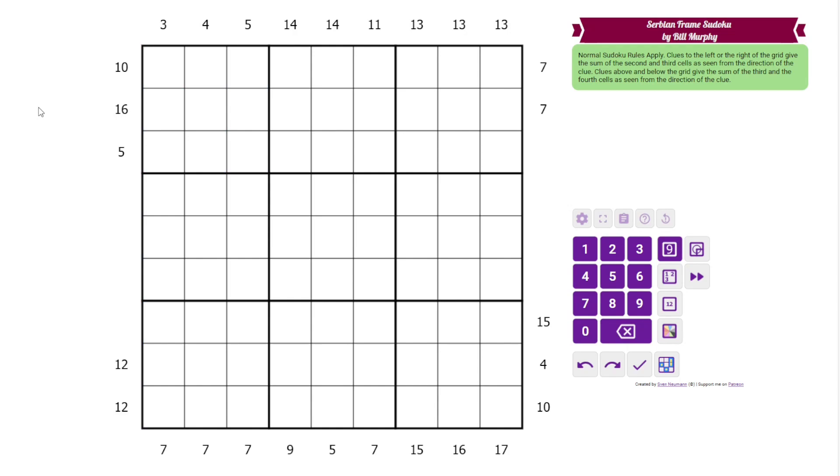Additionally, we have some clues outside the grid, and these mean different things depending on where they are located. The clues on the left and right apply to the rows, and they give the sum of the second and third cells seen from the direction of the clue. This 10, for example, tells us that these two cells sum to 10. This 7 tells us that these two cells sum to 7. In the vertical direction, in the columns, the clues give the third and fourth cells. So these two cells sum to 3, these two sum to 14, these sum to 9 from this direction. Those are the rules.